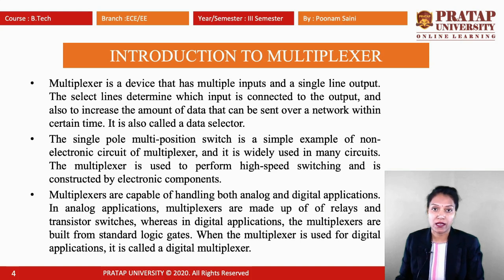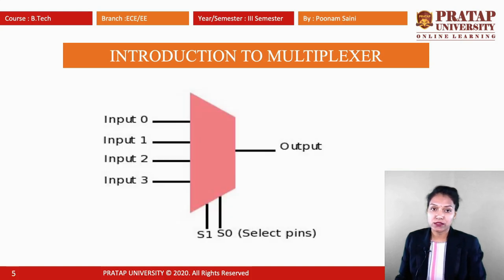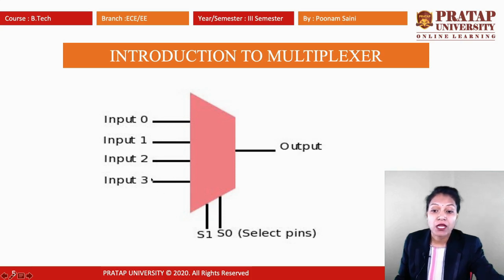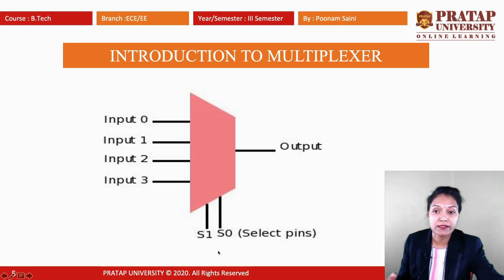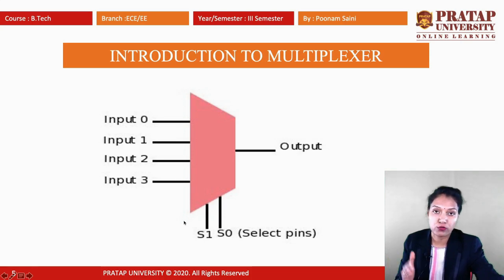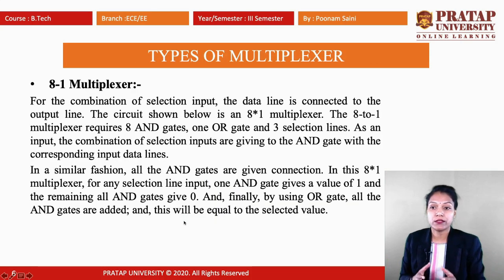In the introduction diagram you can see many inputs — input 0, 1, 2, 3 — and the select lines. When we select S1 or S0, the output is produced. These select lines are used to combine the input data with the select lines to produce the output. There are many types of multiplexers.